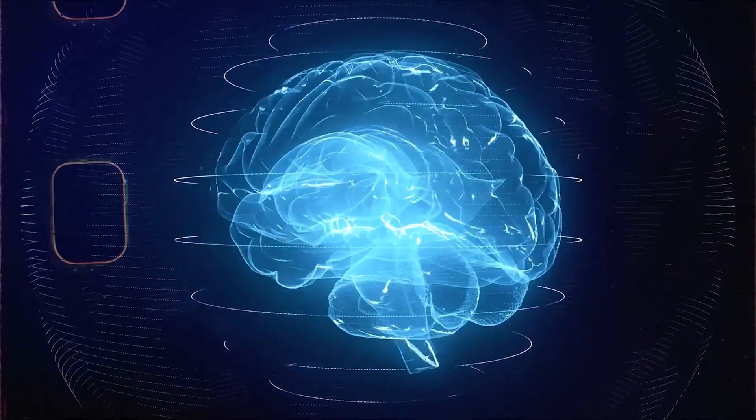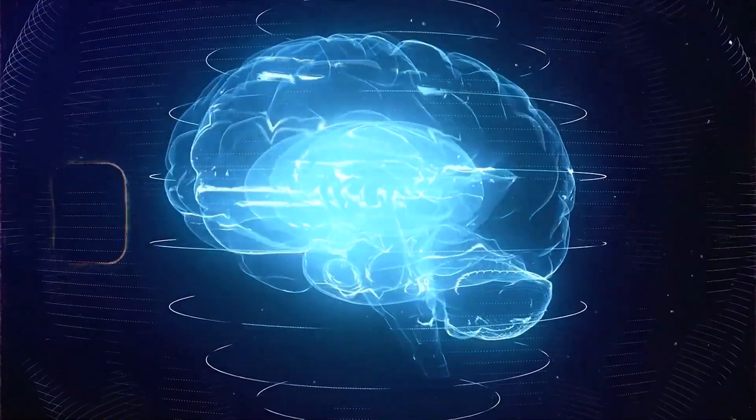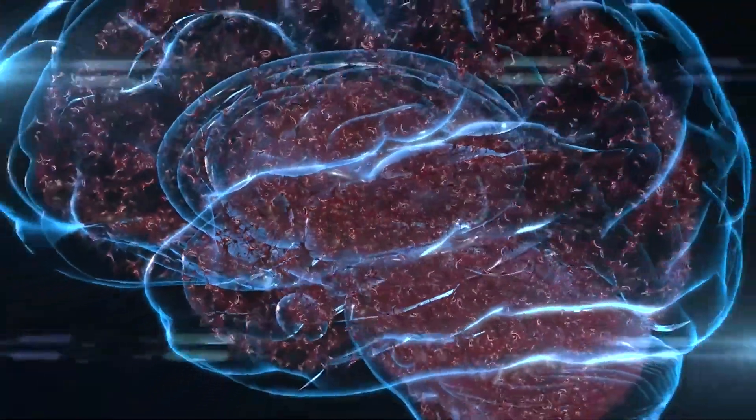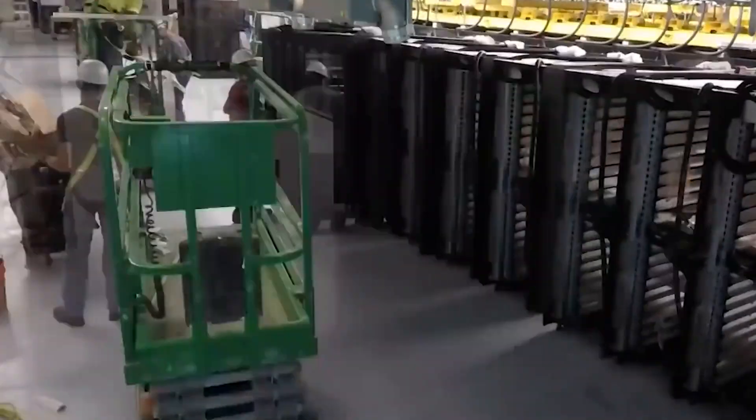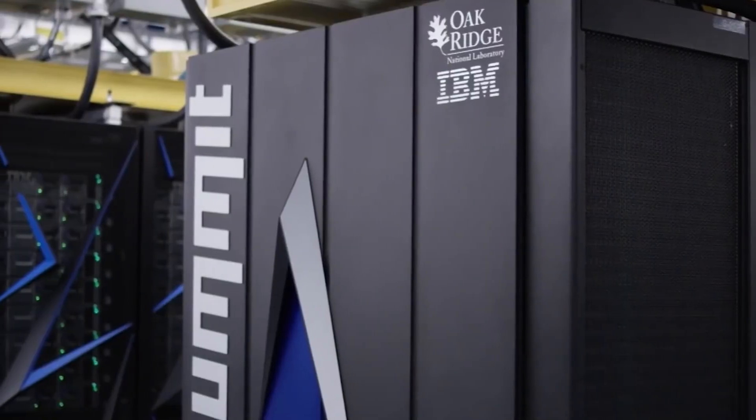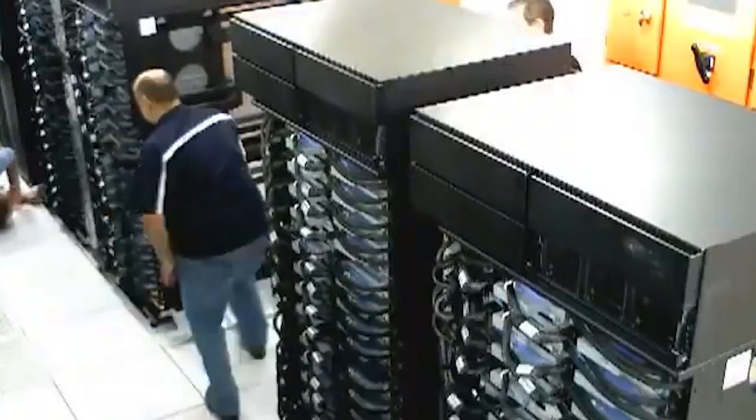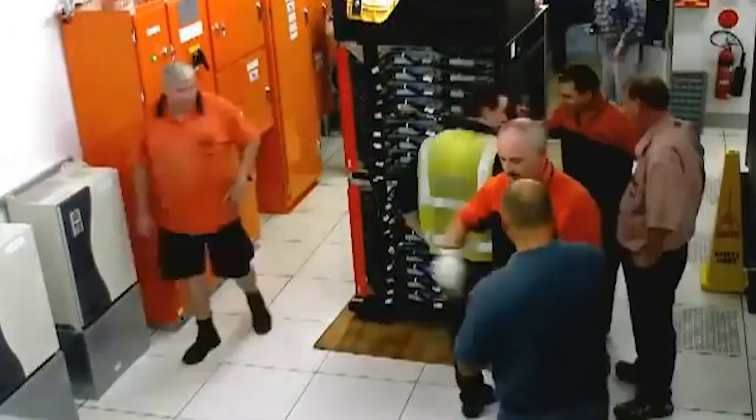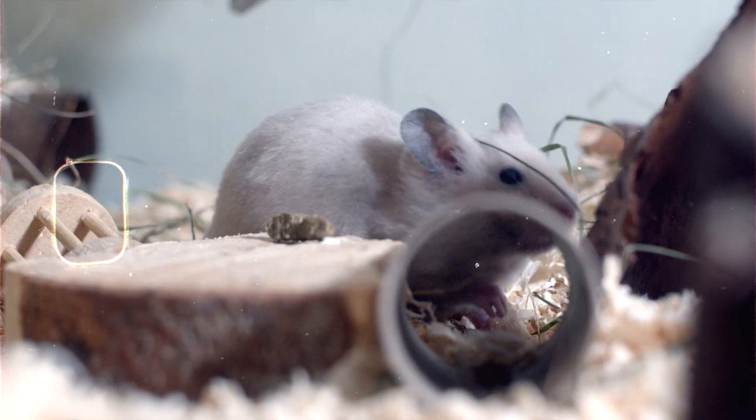What sets the Blue Brain Project apart from others is its scale. It's not just about understanding neurons, it's about simulating them. The team uses the power of the IBM Blue Gene supercomputer, capable of performing a staggering 22.8 trillion calculations per second, to reproduce the neocortical column of a two-week-old rat brain.